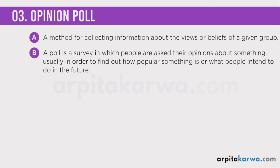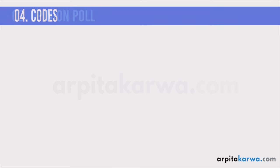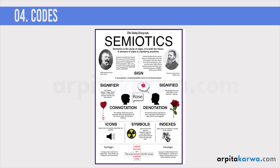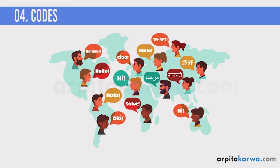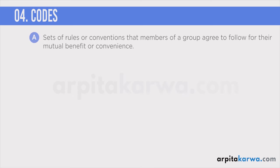Now let us look at the last important concept related to communication: codes. The concept of code comes from a branch known as semiotics, or the study of signs. Semiotics is a branch that people in linguistics study, and it is fundamental to understanding any language. Here, when we talk about communication we are essentially talking about language, and therefore it is important to get a basic idea of what codes are. Codes are social contracts — in simple terms, they are a set of rules that members of a group agree to follow for their mutual benefit.